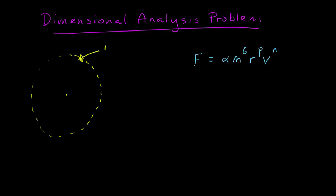So we have some object. It's some mass m. It's moving in a circle of radius r. And it has some velocity v, which is a vector with some speed v.